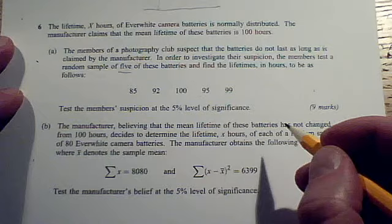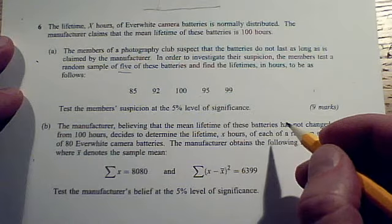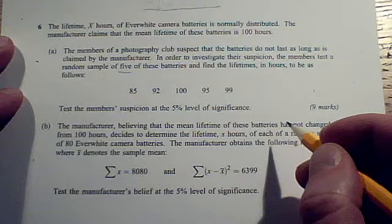If you're using a sigma from the population, then it's Z. If you're using an S from the sample, then it's T.